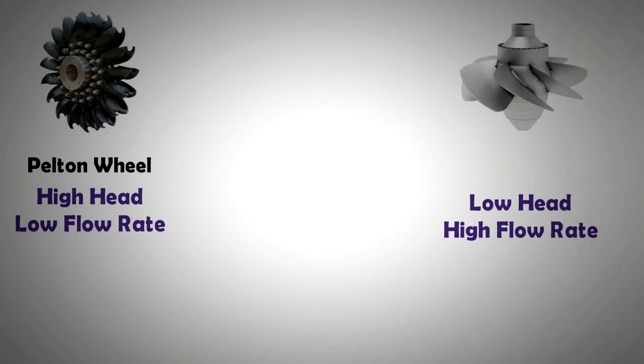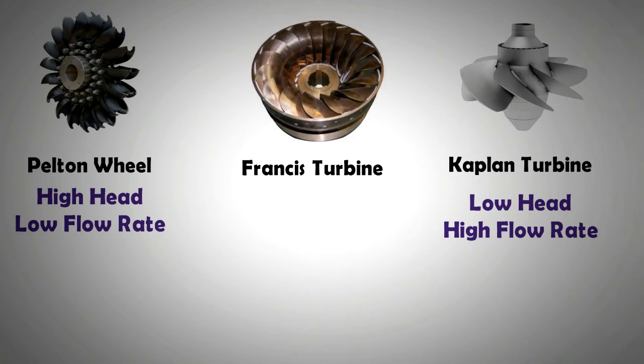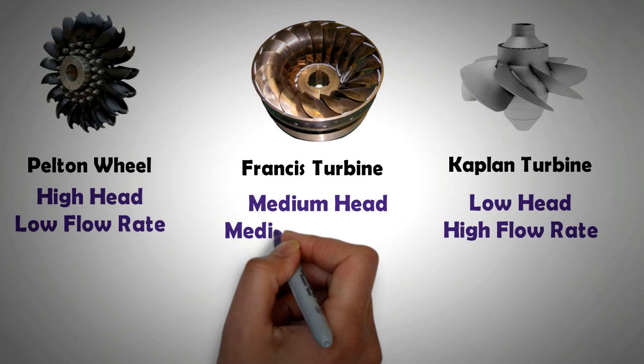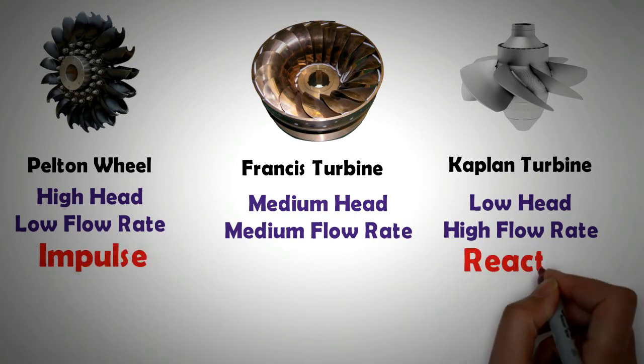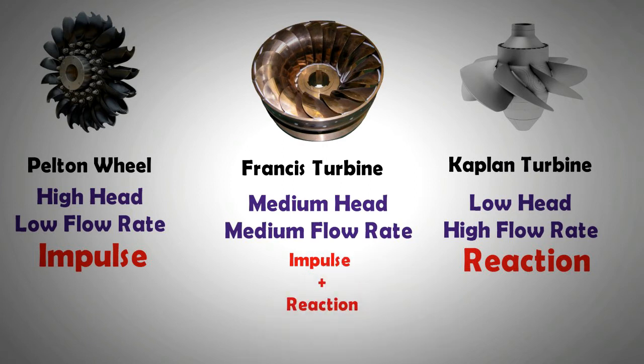Pelton wheel is an impulse turbine whereas Kaplan turbine is a reaction turbine. There is also Francis turbine which falls in the middle. Francis turbines are used for medium head levels and medium flow rates. The operational envelope of Francis turbine is very wide. It is a hybrid turbine in that it utilizes both impulse of the force and reaction of the force.